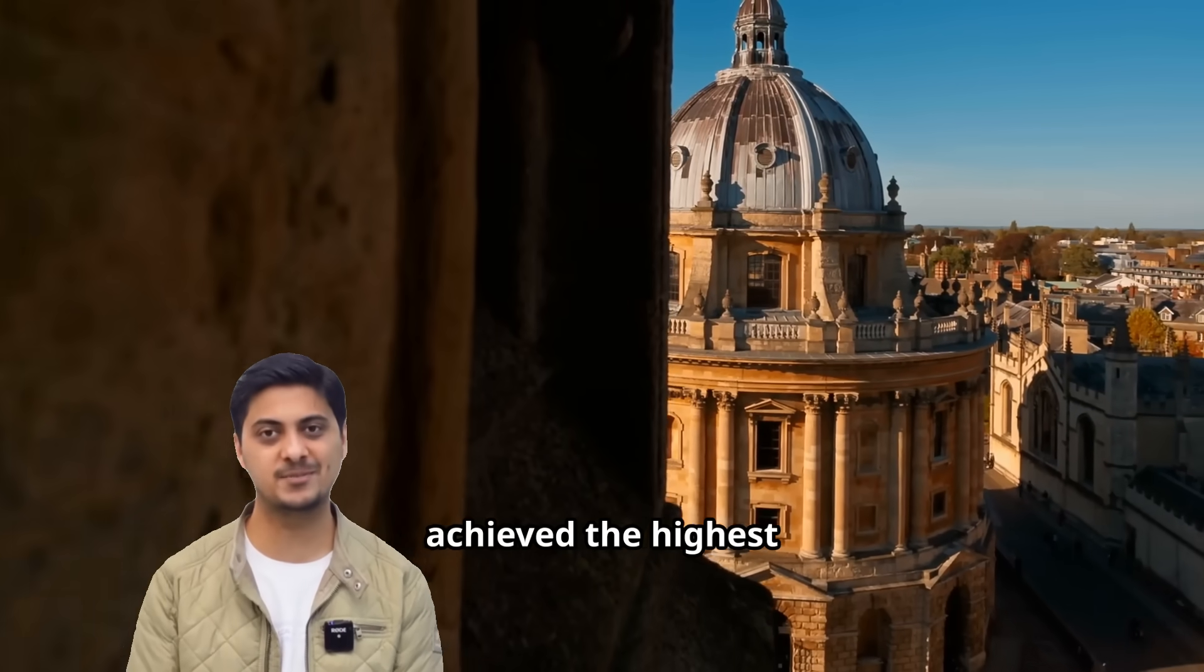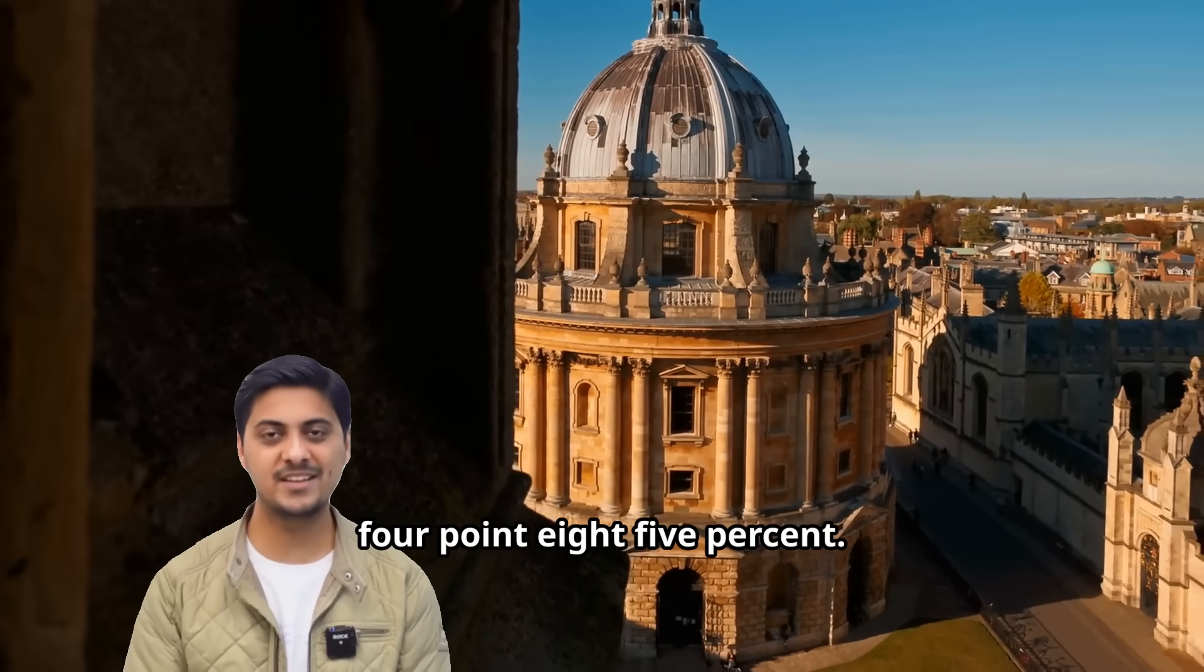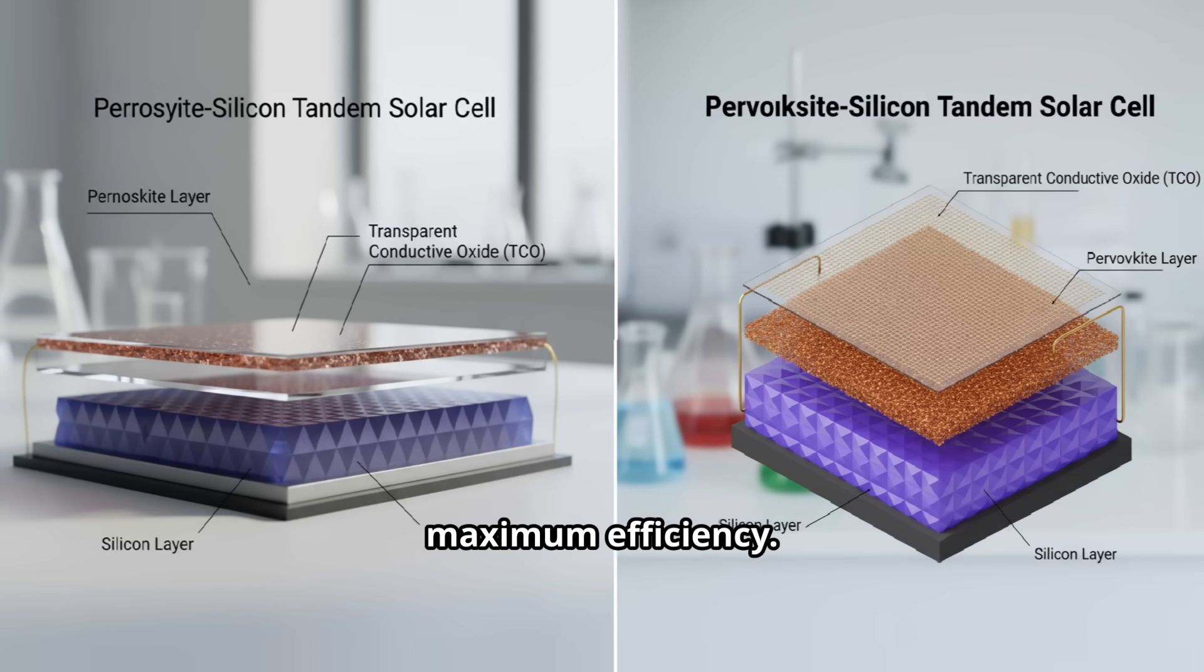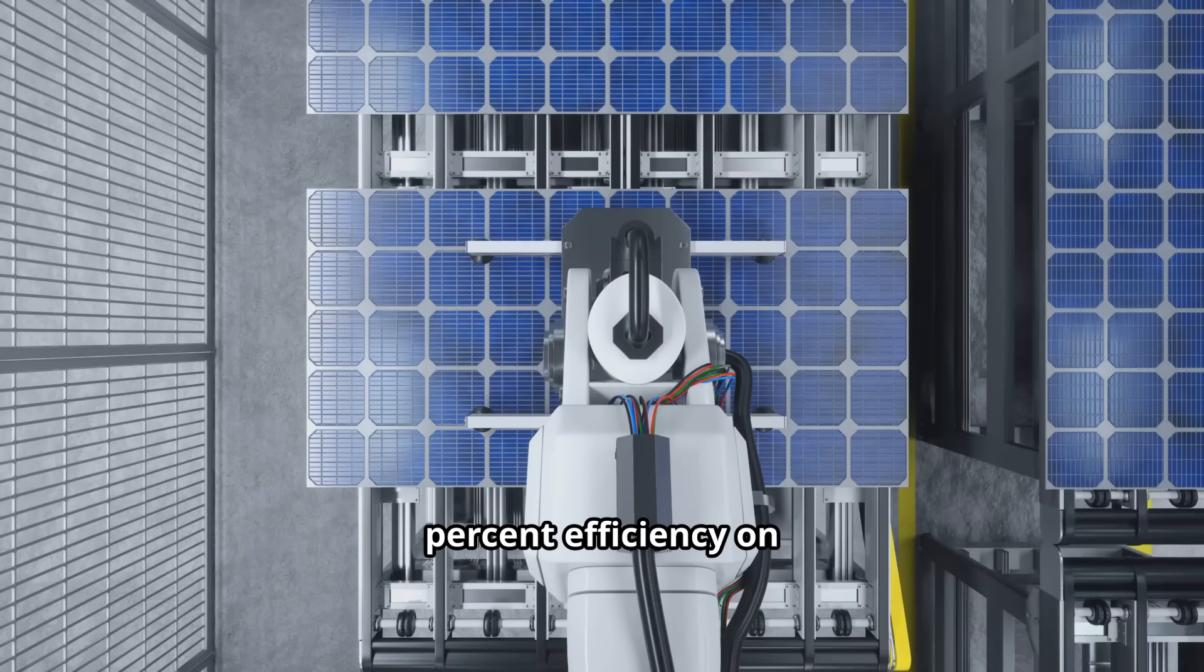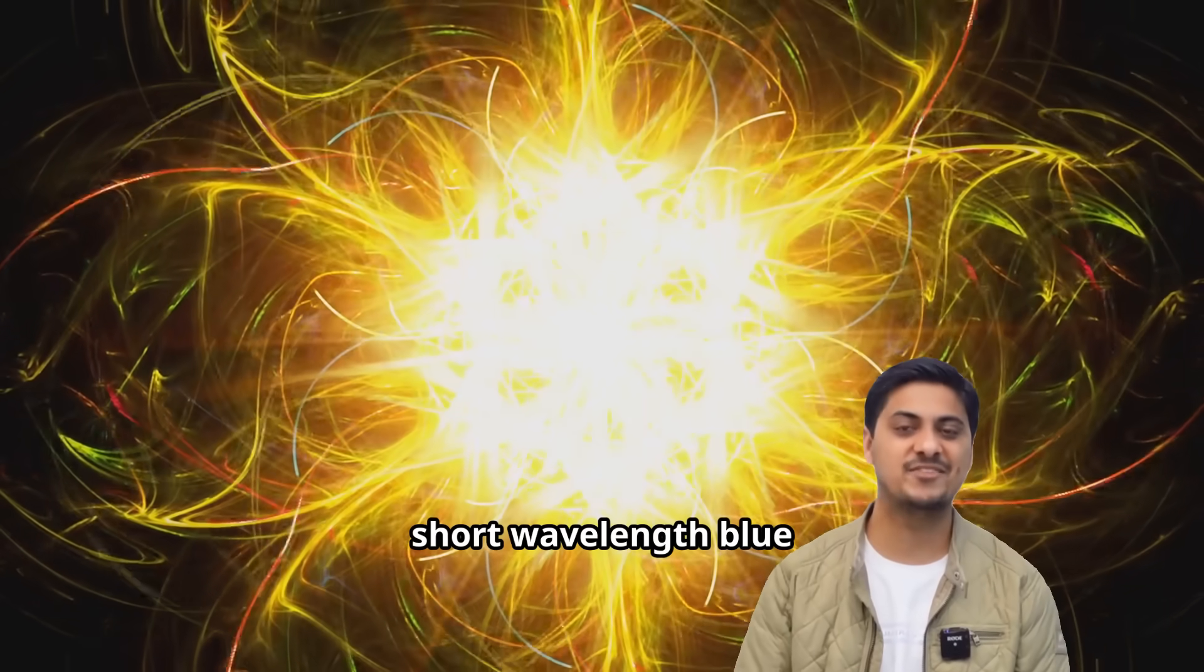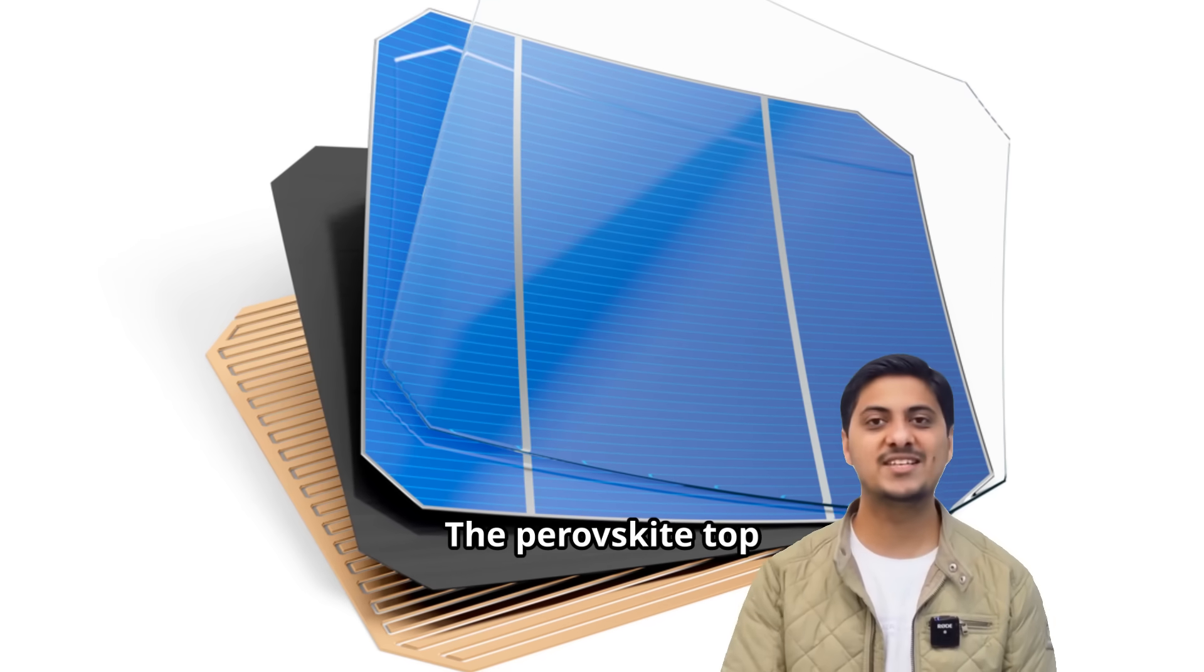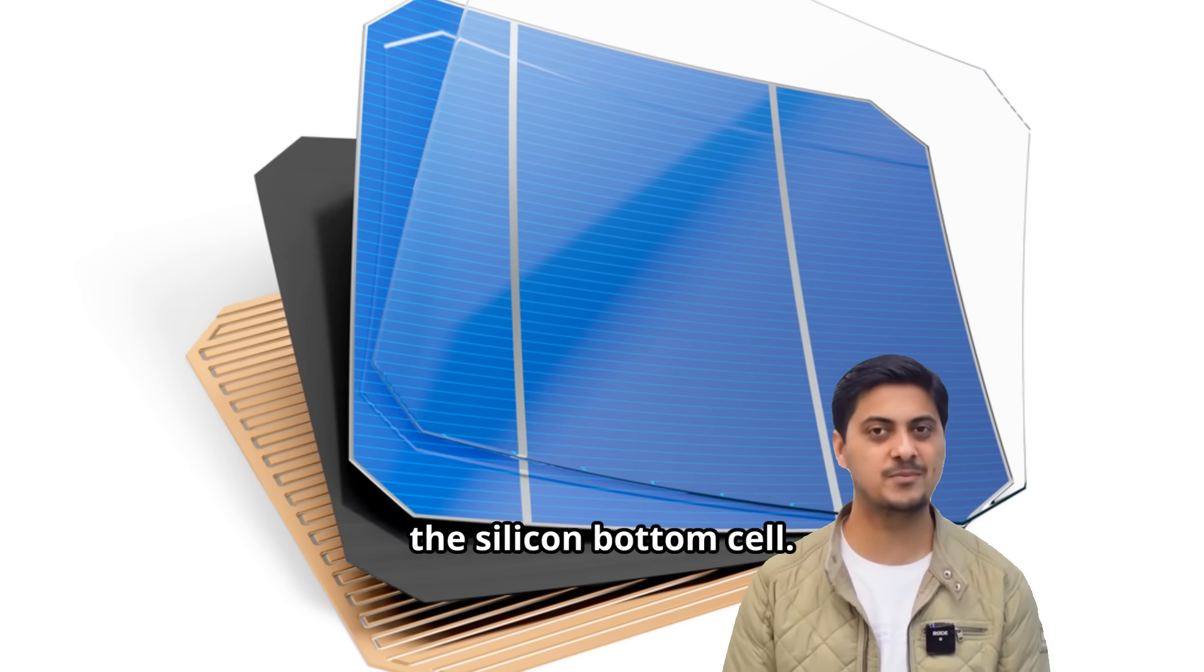Oxford PV has achieved the highest perovskite tandem efficiency of 34.85%. These tandem cells combine the best features of both perovskite and silicon technologies for maximum efficiency. Companies like Hanwha Qcells have reached 28.6% efficiency on full-area industrial cells. Perovskite captures short wavelength blue and green light while silicon handles longer wavelength red light perfectly. The perovskite top layer is semi-transparent allowing unused light to reach the silicon bottom cell.